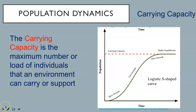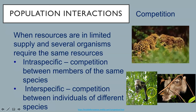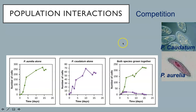One factor influencing population size is competition. When resources are in limited supply and several organisms require the same resources, competition occurs. Intraspecific competition is between members of the same species. Interspecific competition is between individuals of different species. Here is an example of two jaguars in the Brazilian Amazon competing for hunting territory—this is intraspecific competition. Here is an example of a monkey competing for the same habitat space as a sloth in the Brazilian Amazon—this is interspecific competition. In the Paramecium example, when both must compete for the same food resources in the test tube, one population is out-competed by the other.